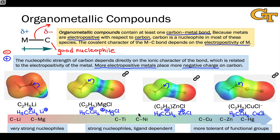And then on the right-hand side, we have organometallic reagents that are still nucleophilic at carbon, but much more mildly so. They're much more tolerant of electrophilic functional groups in general.